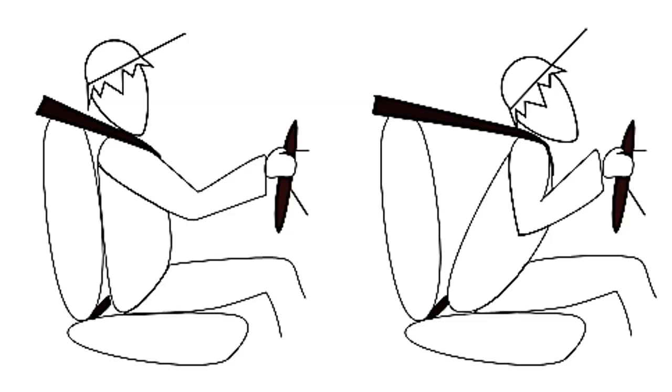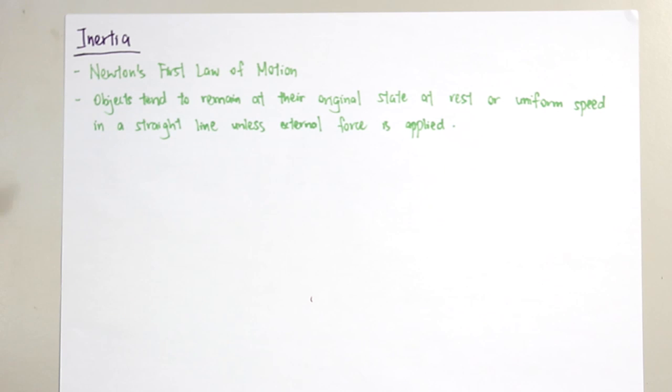When a car is moving, especially at a very fast speed, and when the car is stopped immediately, your body tends to be thrown forward when the brake is applied. This is why we say it's inertia.